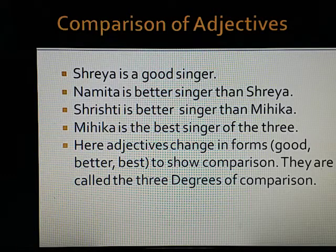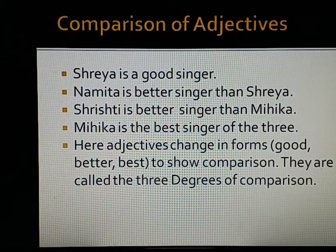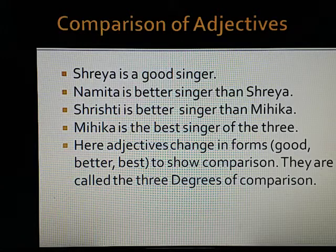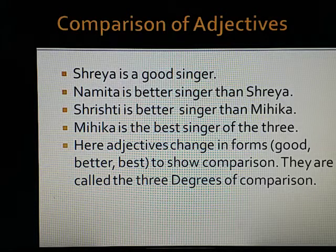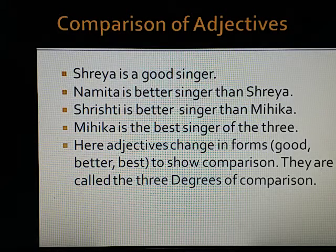Now, comparison of adjectives. Look at these sentences: 'Shreya is a good singer.' 'Namita is a better singer than Shreya.' 'Shristi is a better singer than Mihika.' 'Mihika is the best singer of the three.' Here, adjectives change in form — good, better and best — to show comparison. They are called the three degrees of comparison.